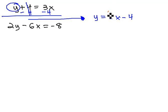Now, what we can do is if y equals 3x minus 4, we can replace the y in the other equation with this 3x minus 4. The other equation is 2y, so now it's 2 times 3x minus 4. The second equation continues, minus 6x equals negative 8.